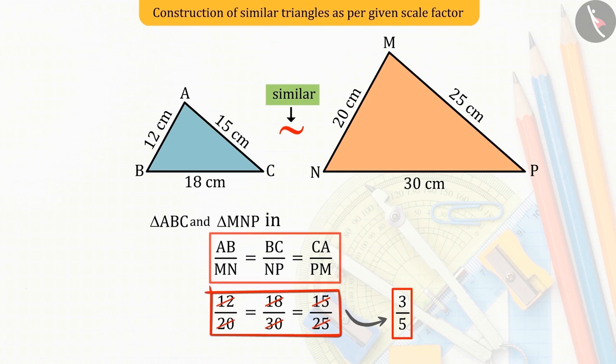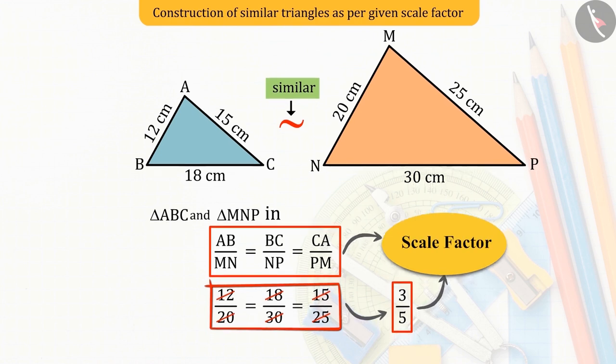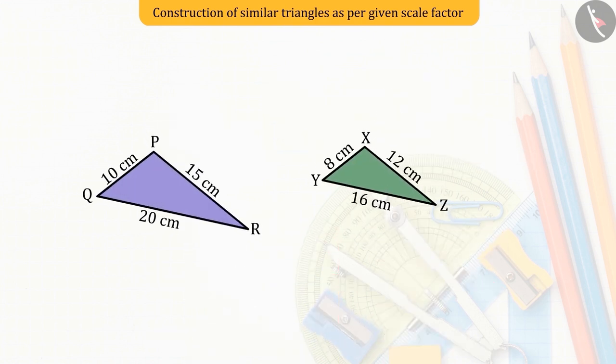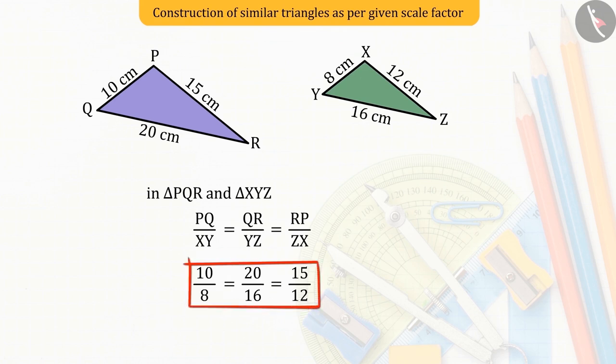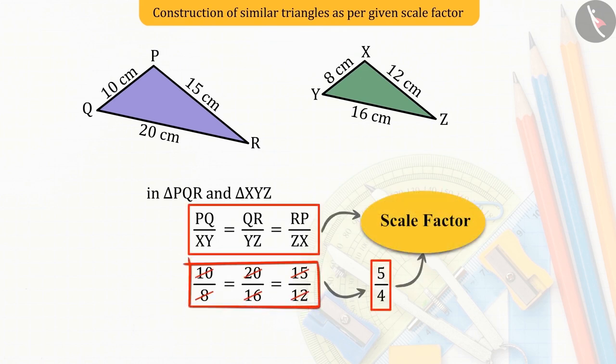This ratio between the corresponding sides of the similar triangles is known as the scale factor. Now, can you find the scale factor between the triangles PQR and XYZ? Well done! The scale factor here is 5 upon 4.